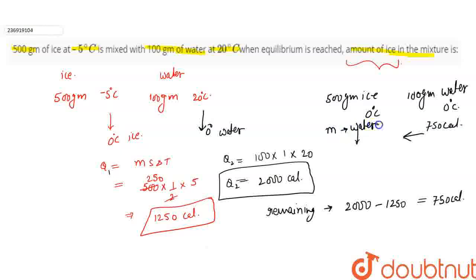Let's say m mass is converting to water. So m mass converting to water requires how much energy? m into latent heat which is 80 equals 750. So m is 750 by 80, which is 75 by 8. So 75 by 8 value is 9.37.